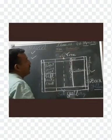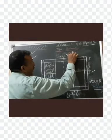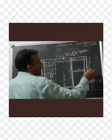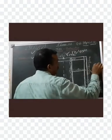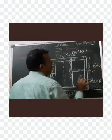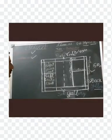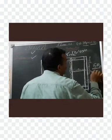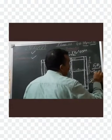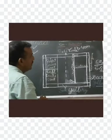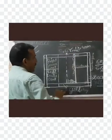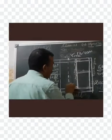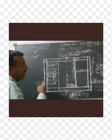Now, the dimension of the badminton court is 13.40 meters by 6.10 meters for doubles, and 13.40 meters by 5.18 meters for singles. The distance from center line to short service line is 1.98 meters.